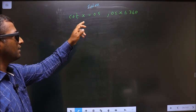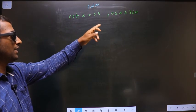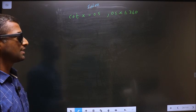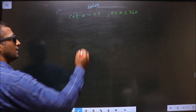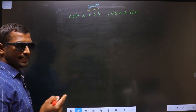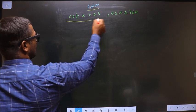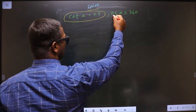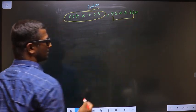Solve cot x equals 0.5 where x lies between 0 to 360 degrees. They told you to solve, so you should find the values for x satisfying this equation and also it should lie in this interval.